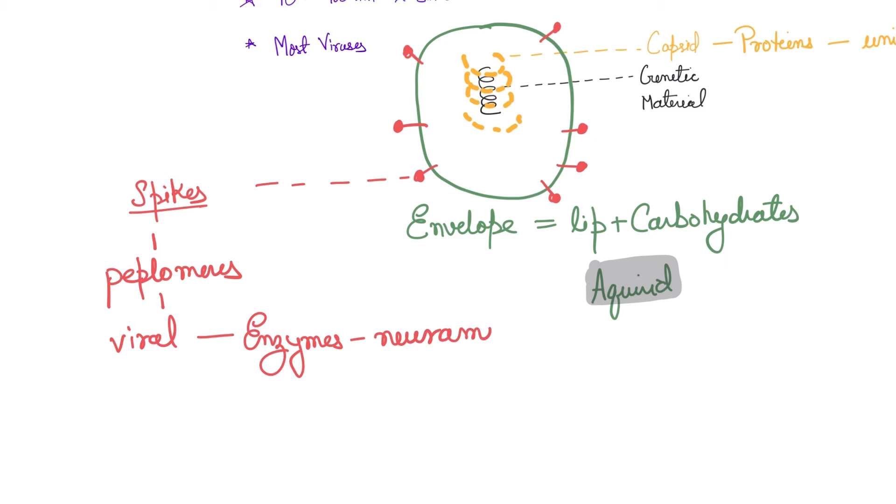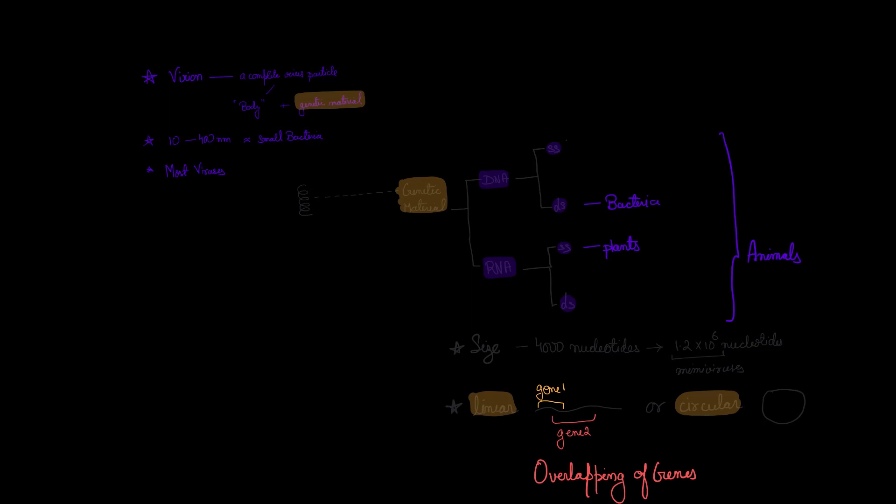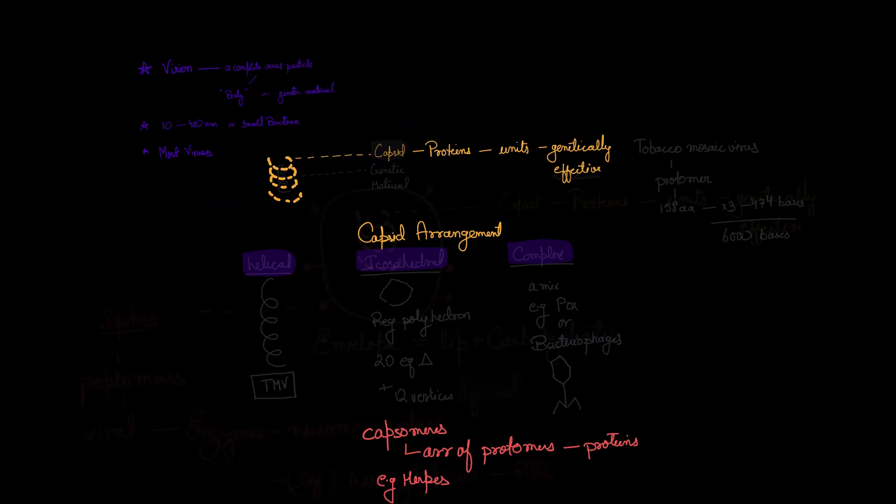That means the virus encodes these and many times these are enzymes like neuraminidase. Sometimes they help the virus attach to the host cell for infection. For influenza viruses, hemagglutinin is a famous spike that helps them attach to the RBCs. I hope you can understand the viral structures today, the structure of DNA, the types of genetic material, the capsid and finally the envelope.